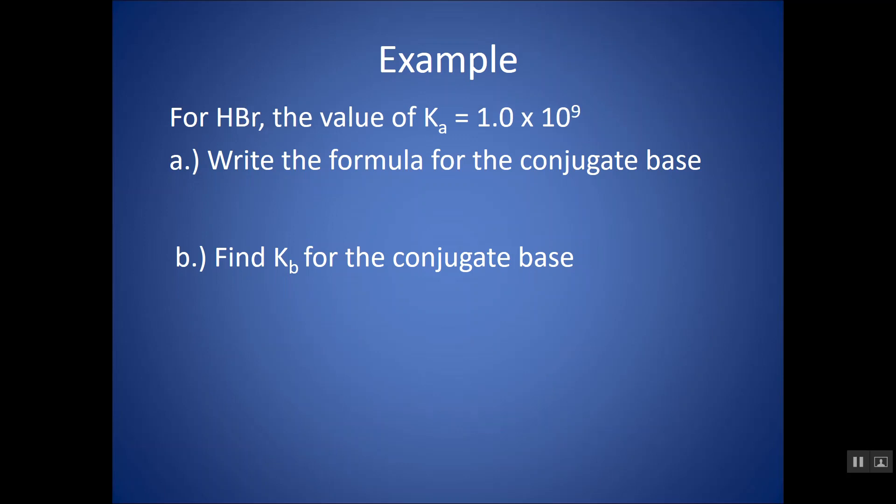Let's try another problem. HBr, here's my Ka. Write the formula for the conjugate base. It would be Br minus. Find Kb. The product of the two should equal Kw, and I get 1 times 10 to the negative 23.